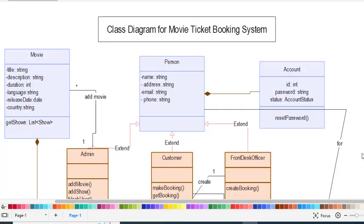Hi everyone, welcome back to the Code With Yousef channel. In this video we will create the class diagram for a movie ticket booking system or cinema ticket booking. I have created the class diagram already to not waste time. We have also created the ER diagram, use case diagram, and activity diagram for this system — you can watch them on my YouTube channel or check the links in the description.